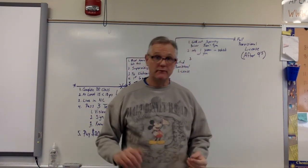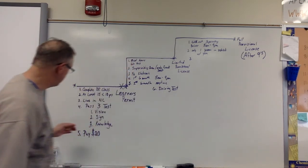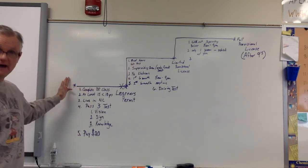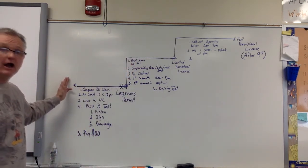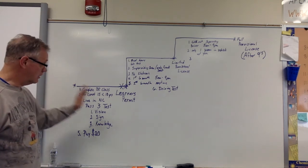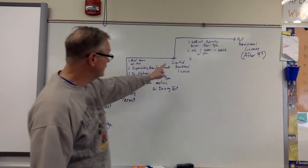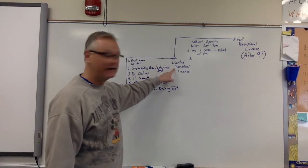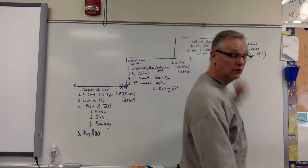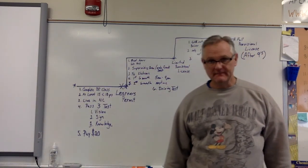That pretty much sums up your path from starting at 15 years old and going from your learner's permit to your limited provisional license to your full provisional license. I hope that's helped.